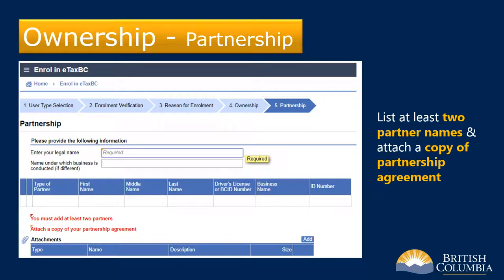If you're a partnership, you need to list at least two of the partners' names — these could be organizations or individuals. You also need to attach a copy of your partnership agreement. If you don't have a copy, you can use a copy of your federal T-5013 partnership return.